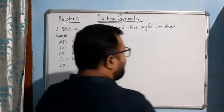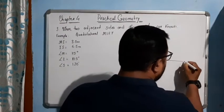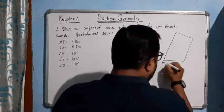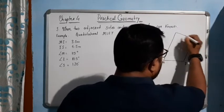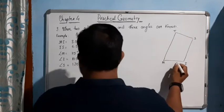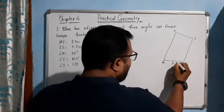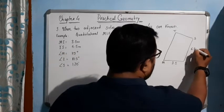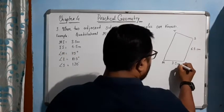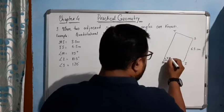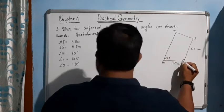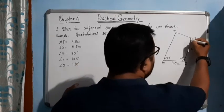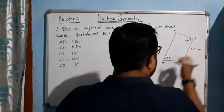Let's draw the rough sketch first. Label the vertices M, I, S, T. MI is 3.5 cm, IS is 6.5 cm, angle M is 75 degrees, angle I is 105 degrees, and angle S is 120 degrees.